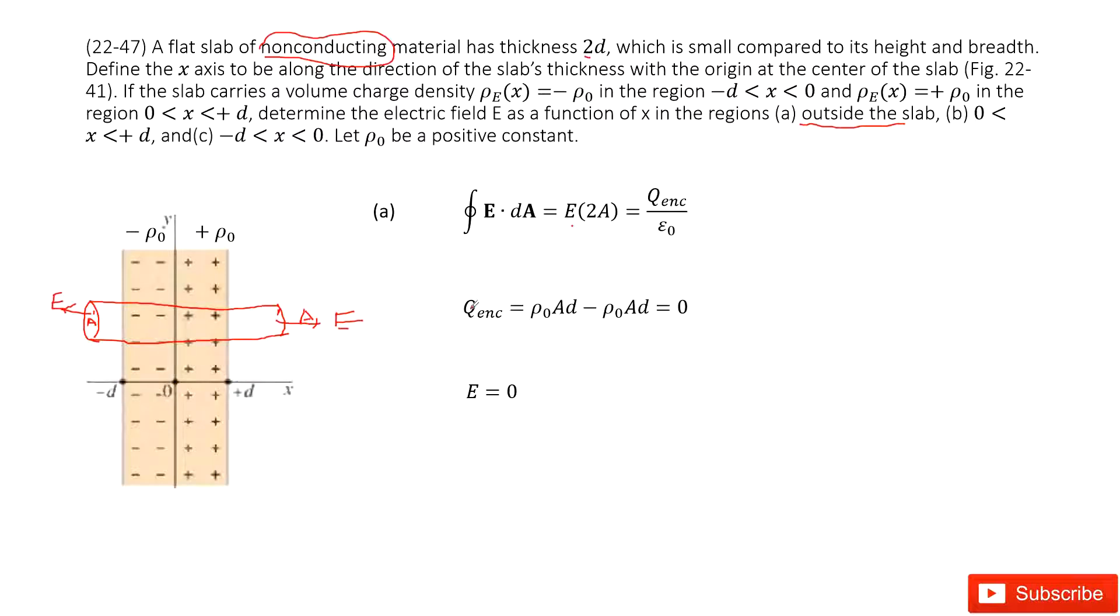Now we look at the enclosed charge. This part is ρ₀ times A times d. Another term is negative ρ₀ times A times d. So the total enclosed charge is 0. This is a positive charge and negative charge, so they compensate. Therefore, the electric field outside of this object is 0.